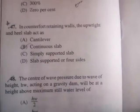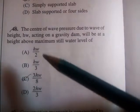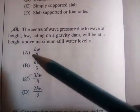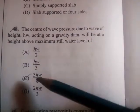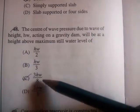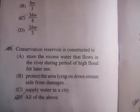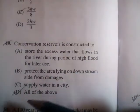Next question: for counterfort retaining walls, the upright and the heel slab act as a continuous slab. The center of wave pressure due to a wave of height hw acting on the structure will be at a height of 3hw/8 above maximum still water level. Correct answer is C.